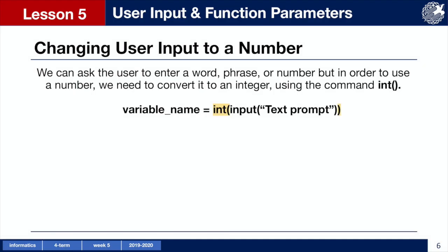If we try to use the input command to get a number from the user and use it as a number in our code, the turtle will give us an error. This is because the turtle reads everything the user enters as a word by default. It is very simple to change the user's input to be read as a number by using the command int. All we need to do is surround our entire input command with int and place parentheses around it. You will notice two closing parentheses at the end of the phrase because we opened two parentheses throughout, so we need to close both or the program will give an error.